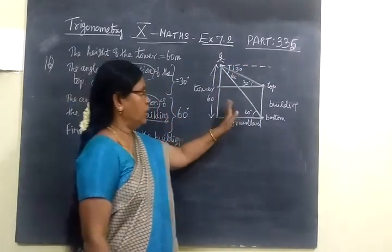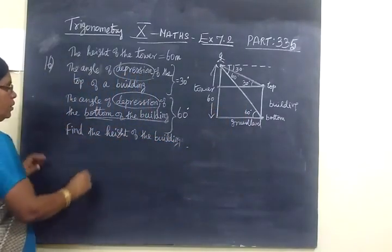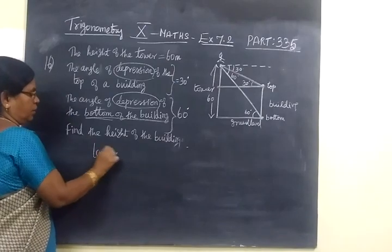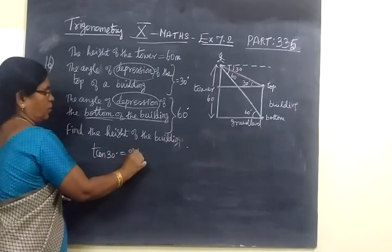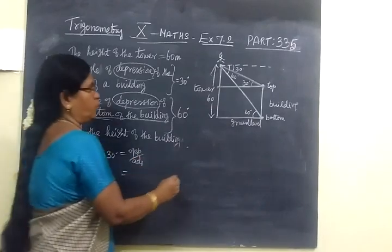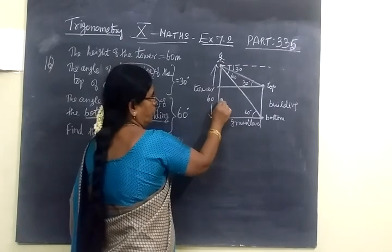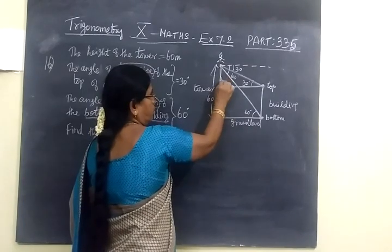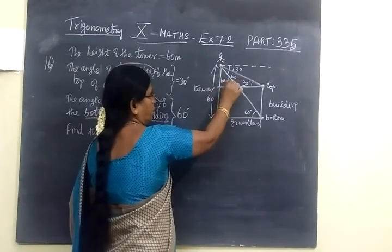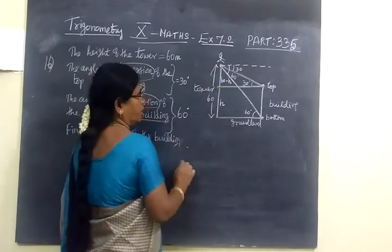You are considering only this type of triangle. Now consider tan 30 degrees. Tan 30 is equal to opposite by adjacent. This will be 60 minus h. This is h, and this is 60 minus h.